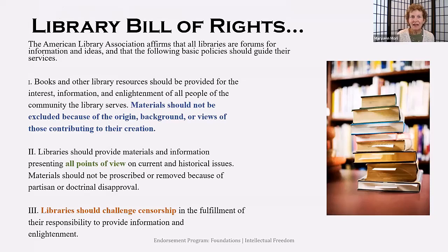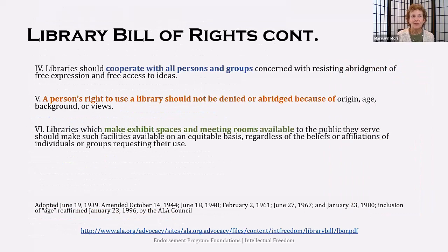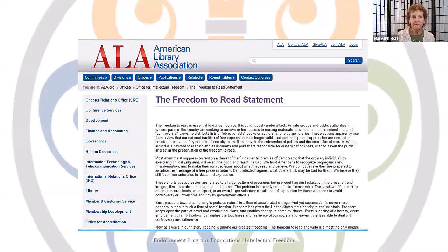Here are the first three points of the Library Bill of Rights, with the key provisions highlighted. Materials should not be excluded because of origin, the background, or views of those contributing to their creation. Your library should have materials and information presenting all points of view. As a librarian, you should challenge censorship. Points four through six go on to say that you should cooperate with persons and groups concerned with resisting restrictions on free expression and free access to information, and that a person's right to use a library should not be denied or abridged because of origin, age, background, or views. The Bill of Rights and intellectual freedom apply not only to your library's materials, but also to your exhibit spaces and meeting rooms.